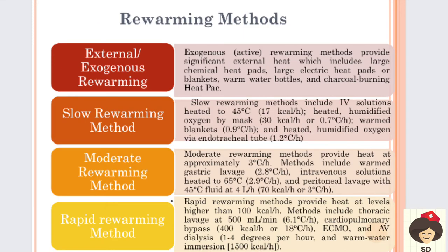Next is the rewarming method. First is external or exogenous rewarming - using external heat like chemical heat pads, large electric heat pads, blankets, warm water bottles, or charcoal burning heat packs. These are all heating methods used to improve heat or prevent severe hypothermia. Next is slow rewarming method - if external methods fail. IV solution should be heated to 45 degrees Celsius and administered so the warm fluid heats the blood. Humidified oxygen by mask - heated water in the humidifier can be administered through mask, delivering 30 kilocalories per hour of heat, increasing temperature by 0.7 degrees Celsius per hour.